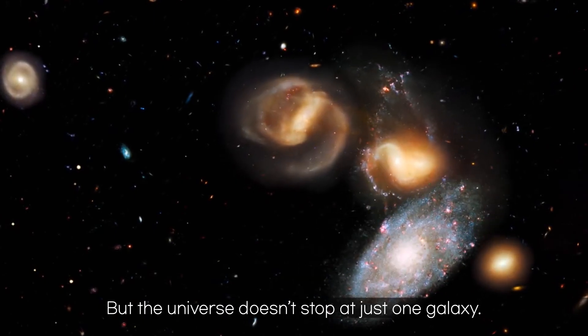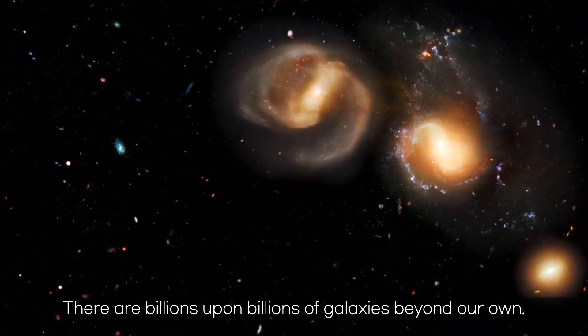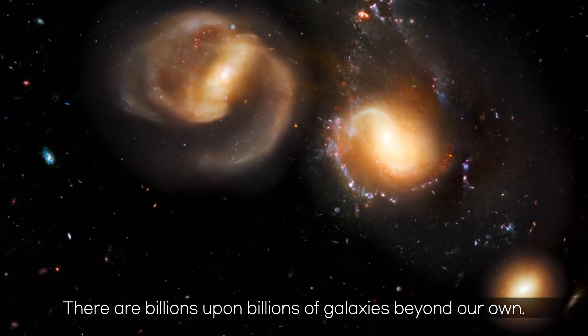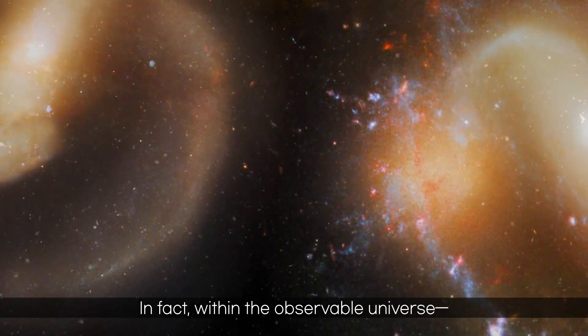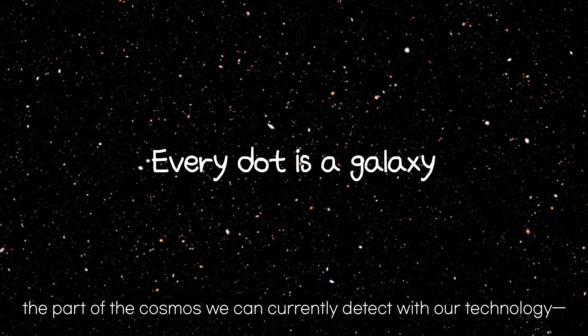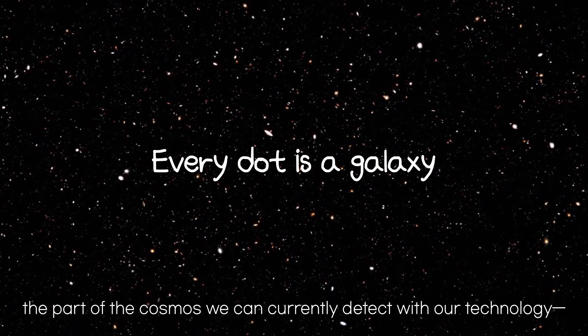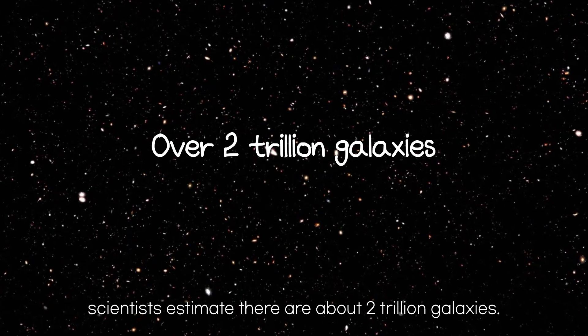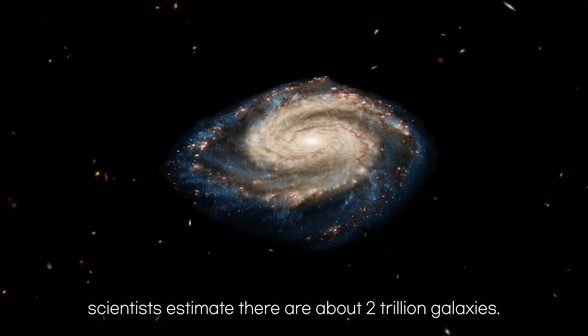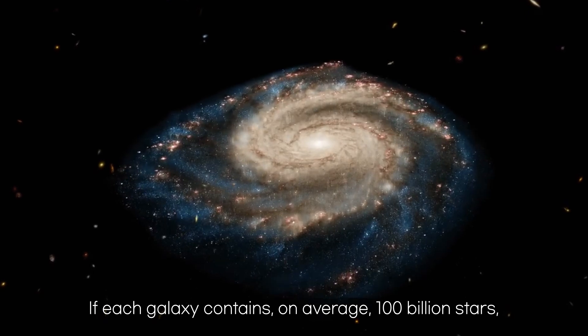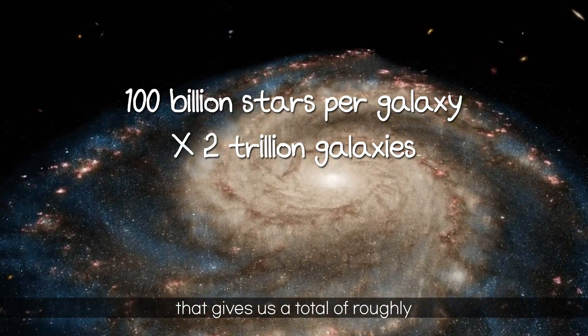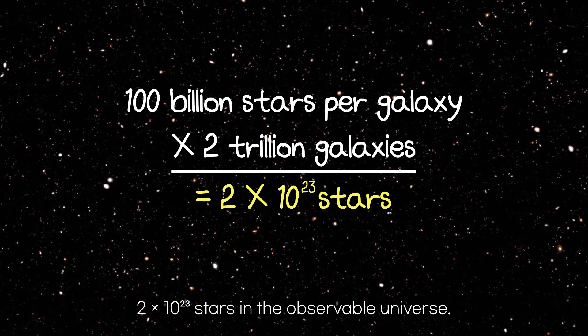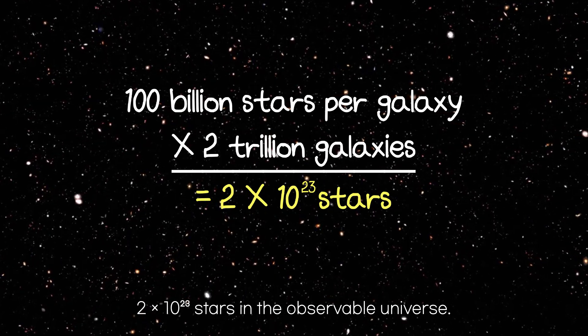But the universe doesn't stop at just one galaxy. There are billions upon billions of galaxies beyond our own. In fact, within the observable universe, the part of the cosmos we can currently detect with our technology, scientists estimate there are about 2 trillion galaxies. If each galaxy contains, on average, 100 billion stars, that gives us a total of roughly 2 times 10 to the 23rd stars in the observable universe.